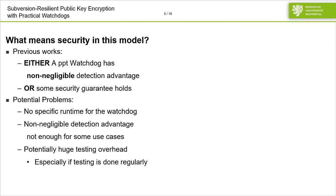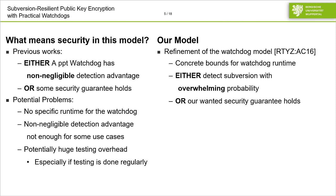The second point: a non-negligible detection advantage might just not be enough for some specific use cases. For example, you could consider an investigative journalist who has to fear that a backdoor might reveal his identity. In that case, you rather want a high or even overwhelming detection advantage rather than non-negligible. On the other hand, you could argue that you could simply boost existing constructions by repeatedly executing the watchdog in order to boost your detection advantage. However, this might induce a potentially huge testing overhead, especially if testing is not a one-time event. With these concerns in mind, in this work we propose a refinement of the watchdog model proposed by Russell et al. at ASIACRYPT 2016.